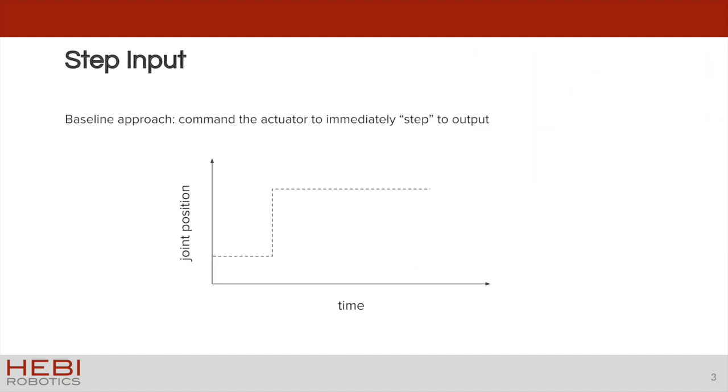As a baseline, let's start by ignoring this advice of smooth inputs. The simplest possible approach is to simply command the actuator to immediately step to the desired goal position. The commanded position over time will look like this.